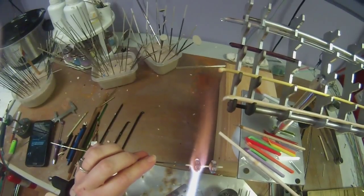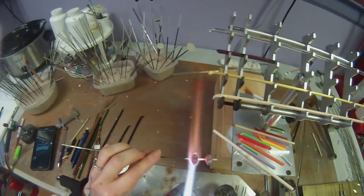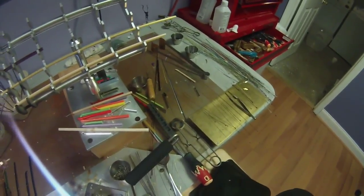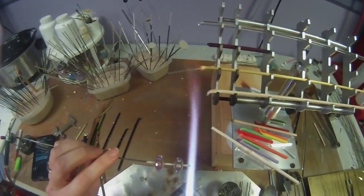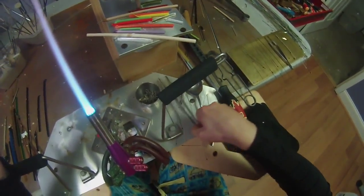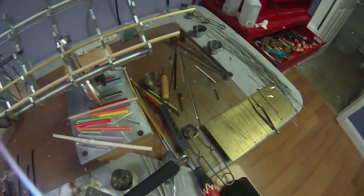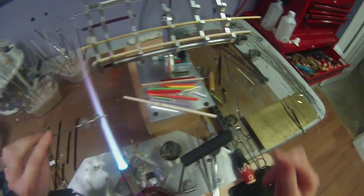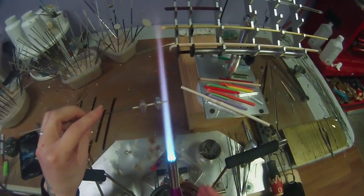And the last step, aside from making sure these have a good amount of heat, is I usually put some sort of little accent dots. Sometimes I'll do metallic, sometimes I'll do silvered ivory, sometimes I'll do just plain ivory. I think I'm going to do metallic with these, so let's see if I can find any aura. There's some. This is just a random little piece of aura stringer.